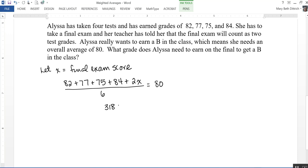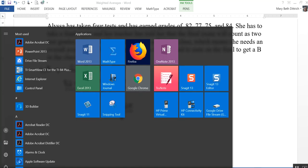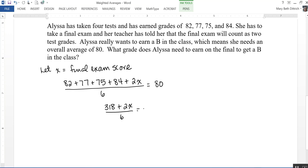And that gives me 318 plus 2x divided by 6 equals 80.